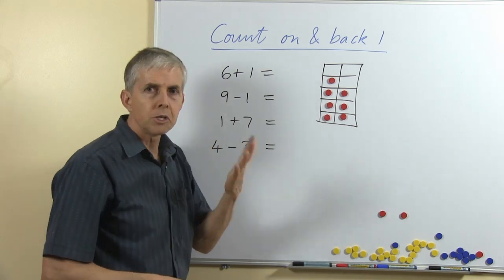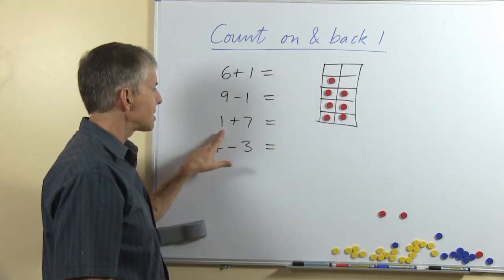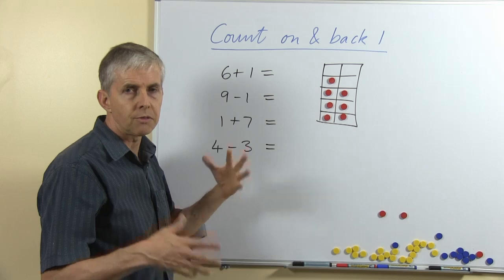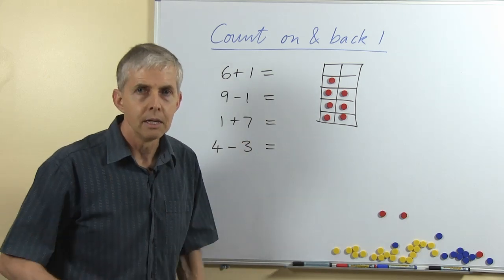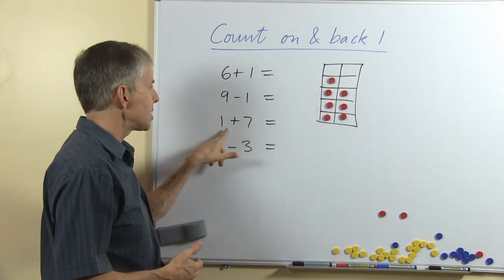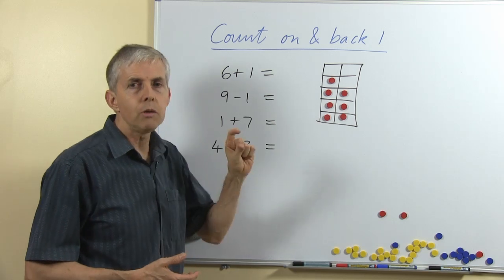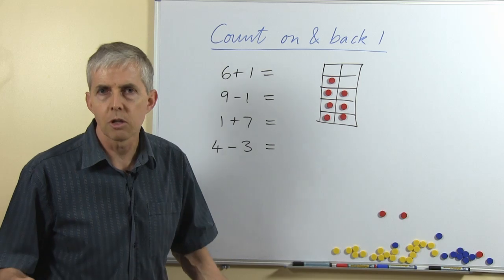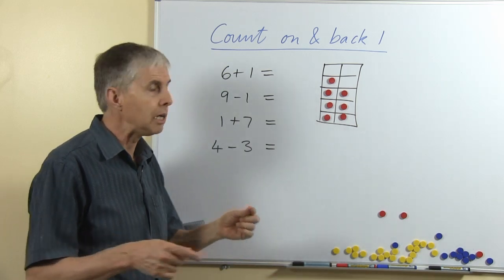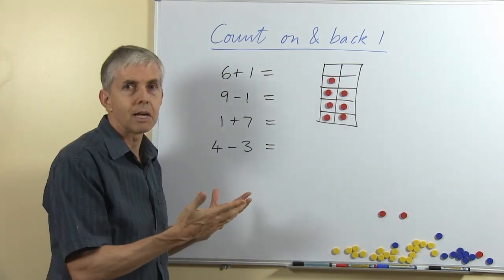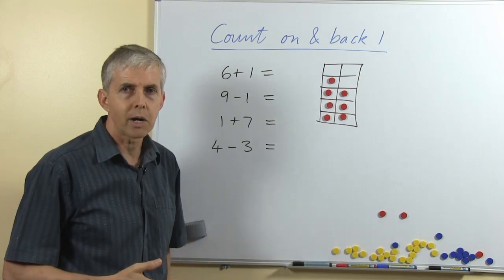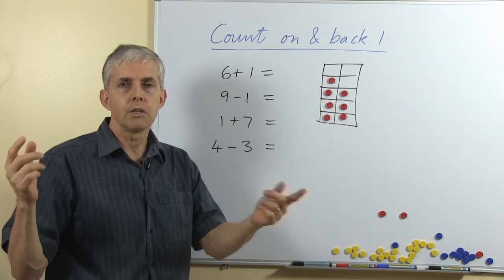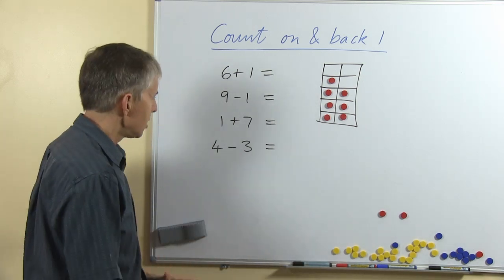1 plus 7, again using a count on strategy. Of course we don't start from 1 and then count on 7, that defeats the whole purpose of memorizing number facts, but if we start with the 7 and count on 1. So we want students to recognize that if we're only adding 1 or 2, and I wouldn't go any further than that, then we can use a counting strategy. But if it's the other way around it's still the same number, so there'd need to be some practice in recognizing the turnaround nature of the number facts.